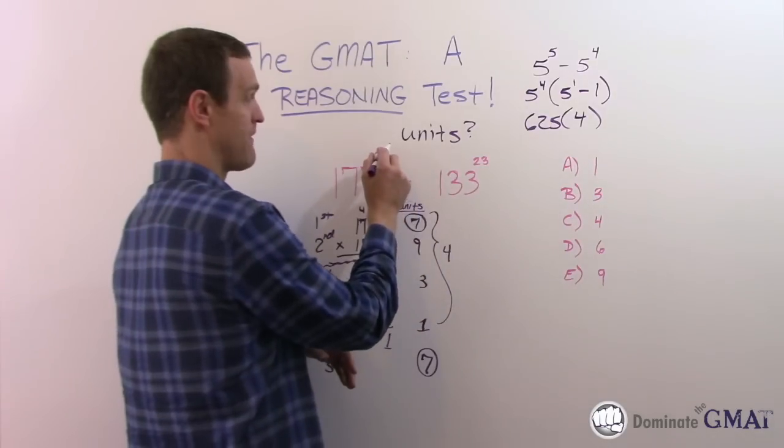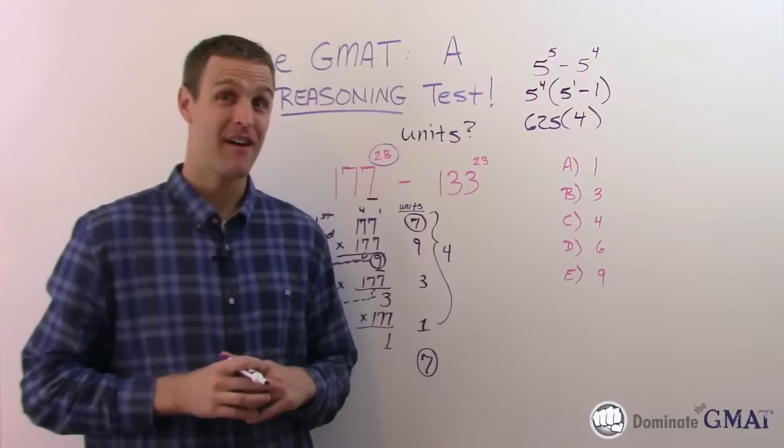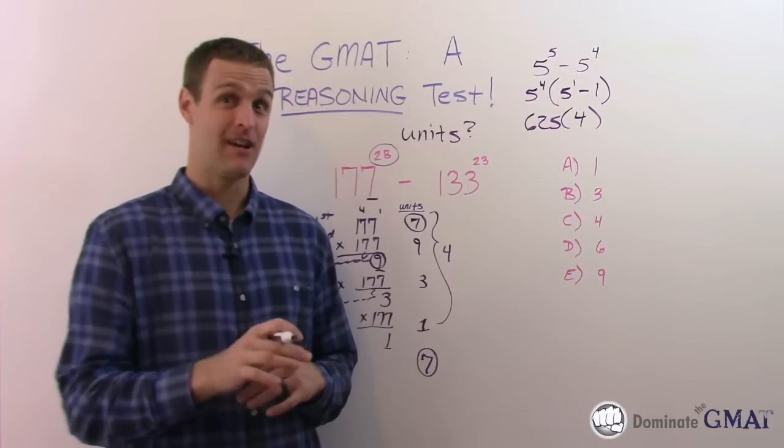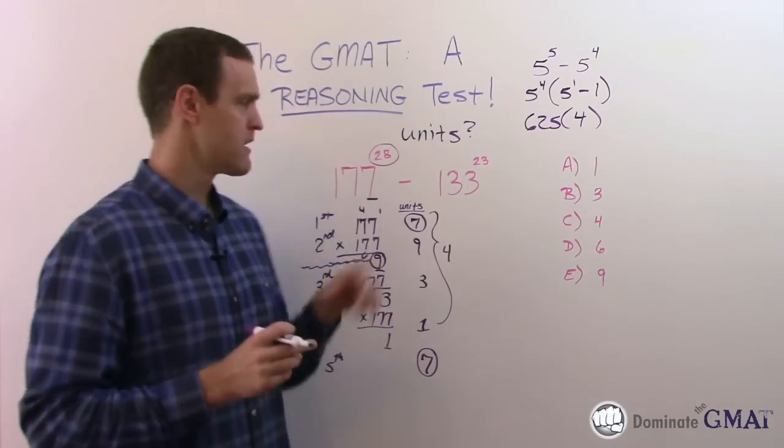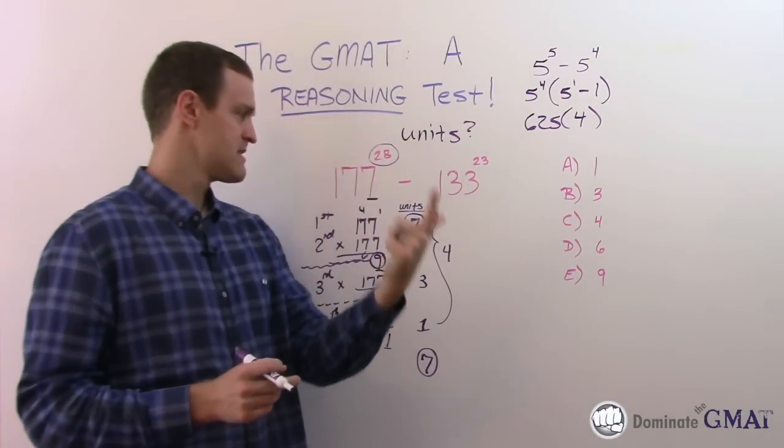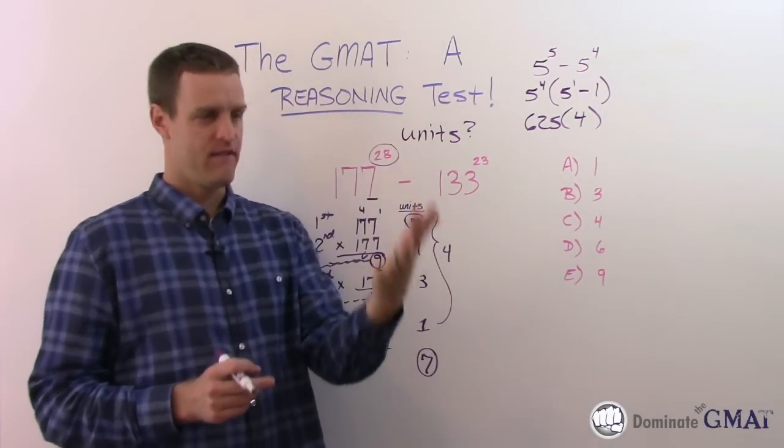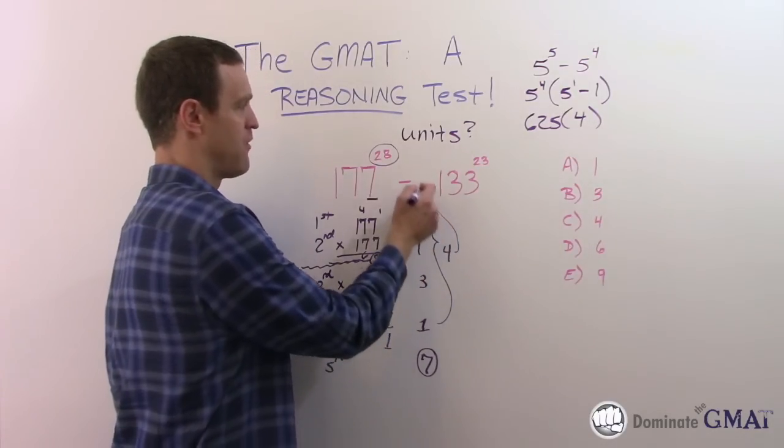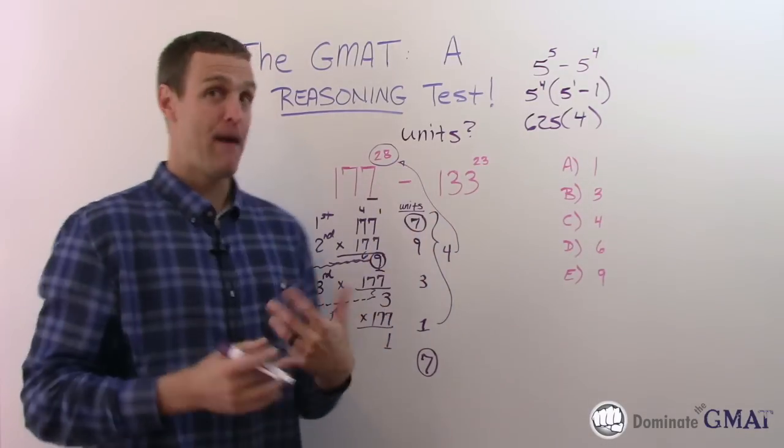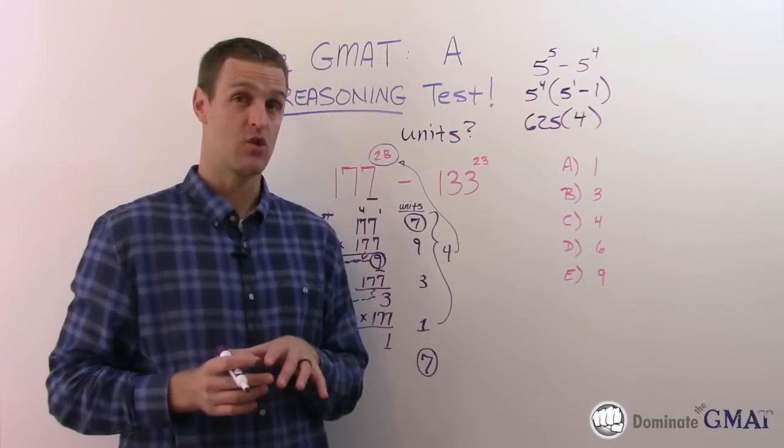Will that be useful to figure out the unit's digit at the 28th power? Yes, it will. This takes reasoning. The first power is 7, second is 9, third is 3, fourth is 1, fifth is 7. It repeats every four. How many times does 4 go into 28? The pattern repeats 7 times because 4 times 7 is 28. It will go in perfectly.